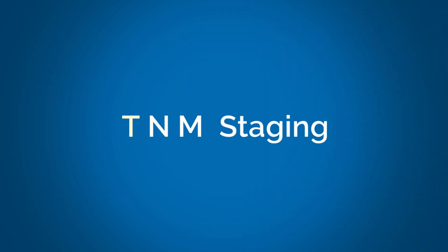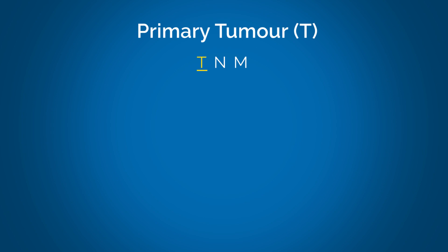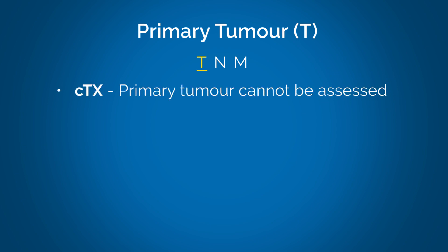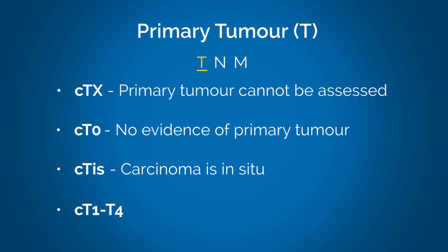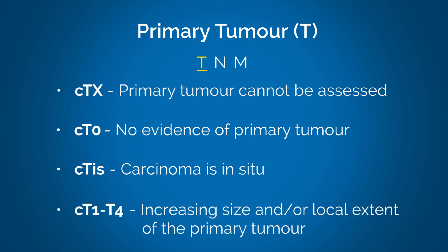Primary tumor — T. When assigning a clinical classification to the primary tumor, the following combination of letters and numbers is used: cTX means the primary tumor cannot be assessed; cT0 means there is no evidence of primary tumor; cTis means the carcinoma is in situ; and cT1 to T4 refers to the increasing size and/or local extent of the primary tumor.